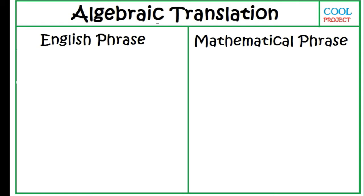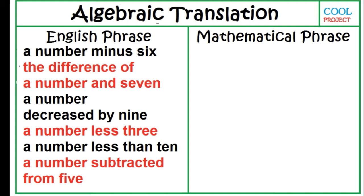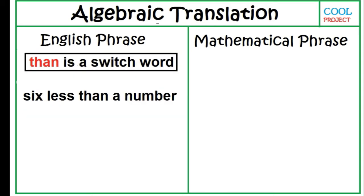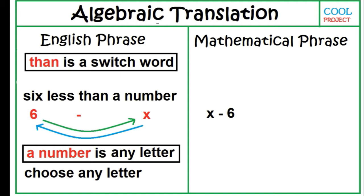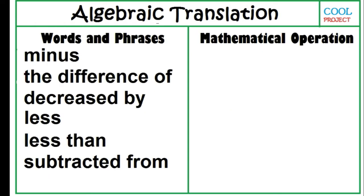Translate from English phrase to mathematical phrase. A number minus 6. The difference of a number and 7. A number decreased by 9. A number less 3. A number less than 10. A number subtracted from 5. Note: 'than' is a switch word. To translate '6 less than a number,' switch 6 and X. A number is a letter in the English alphabet. When not specified, choose any letter.